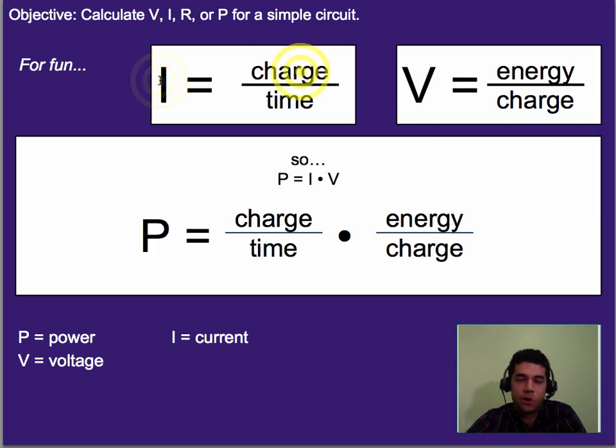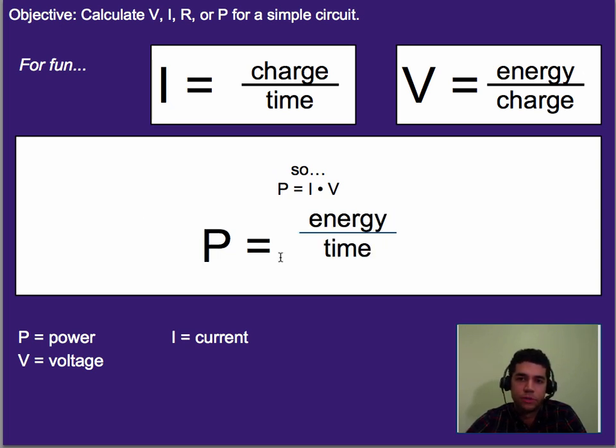So if we know that current is charge divided by time, and we know that voltage is energy per charge, then power as current times voltage is simply charge over time times energy per charge. Well, if you've taken chemistry, you know that some units can cancel here. So we can cancel out the charge because it's on top and bottom, which just leaves us with energy per time. So really what that means is current times voltage is the equivalent of energy divided by time. So we're looking at how much charge comes through and then how much energy each charge has. So combined, we can figure out energy per time.